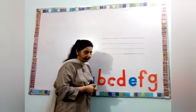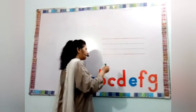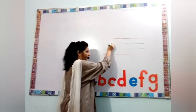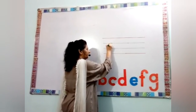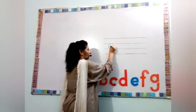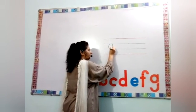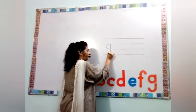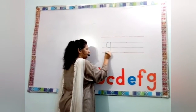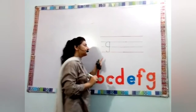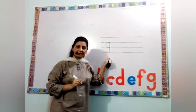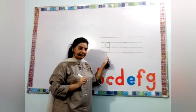To write G, starts from the middle line. Make a G, go up, come down to the bottom and little turn. G. Which sound is this? G.